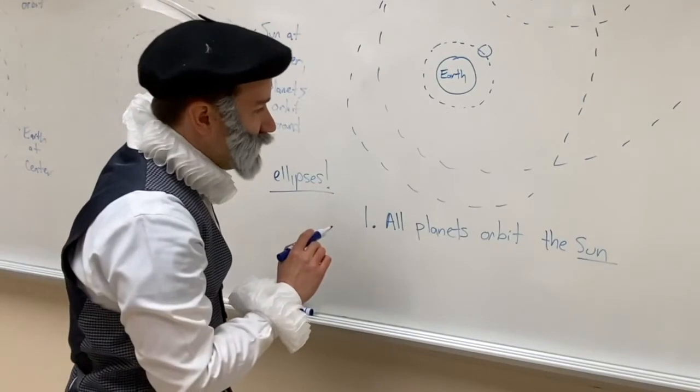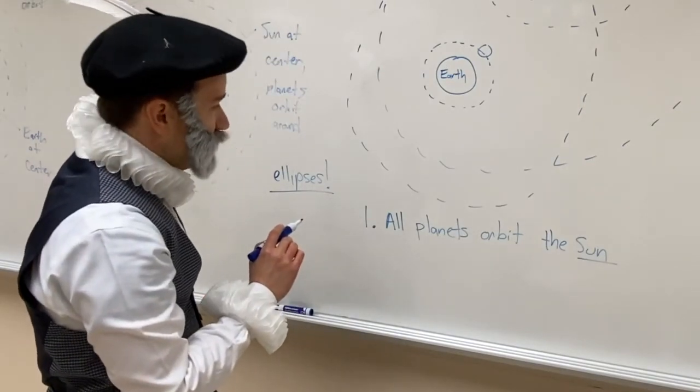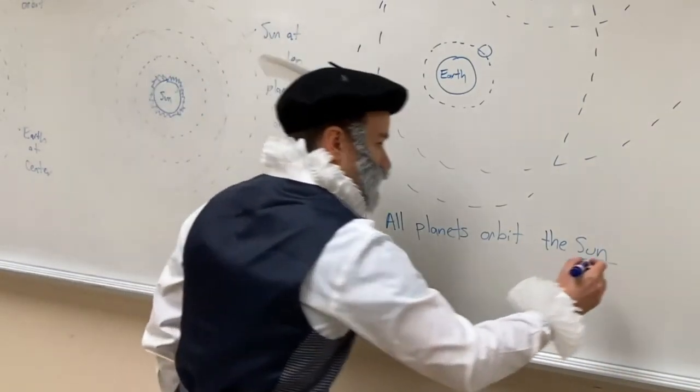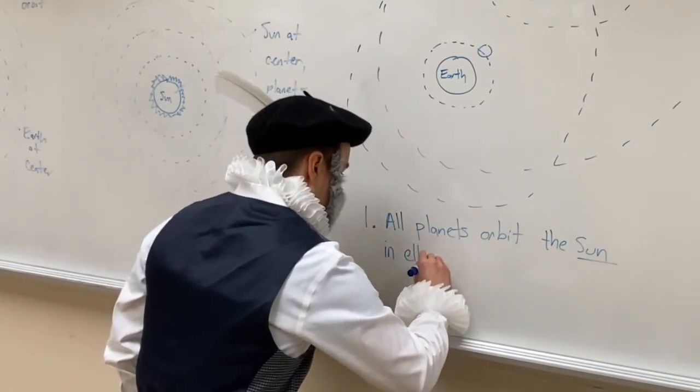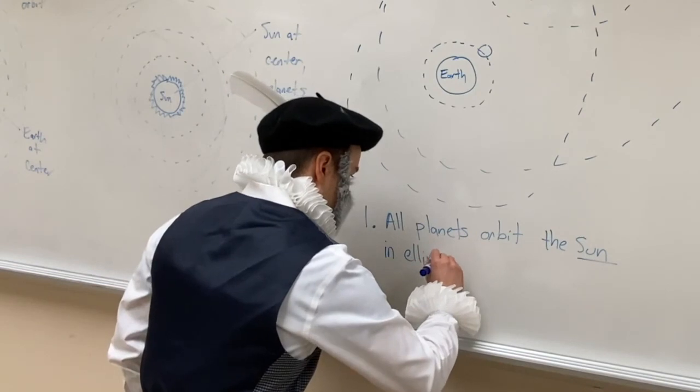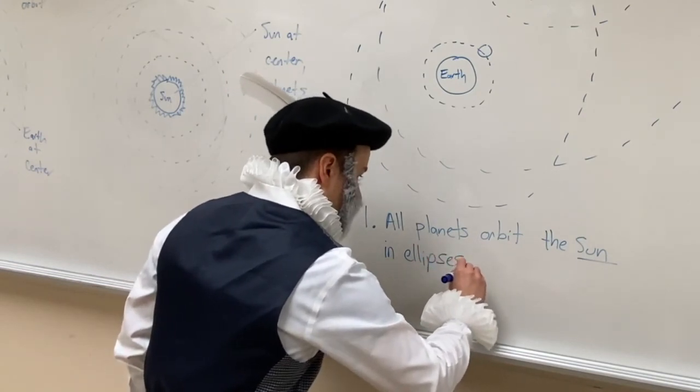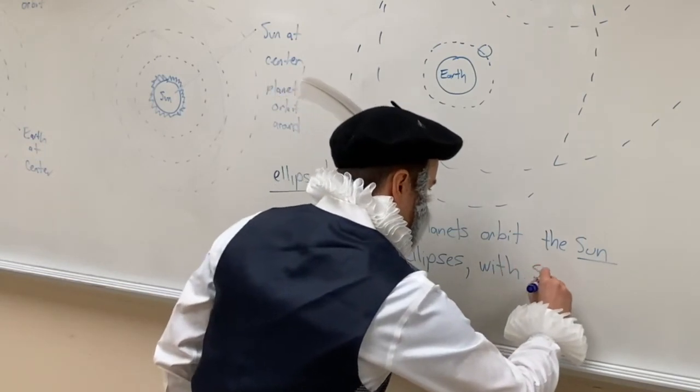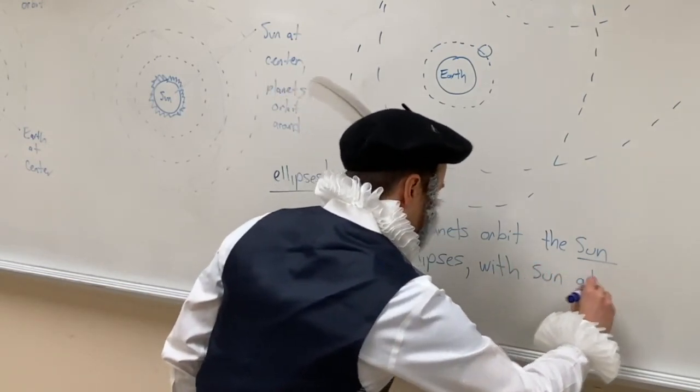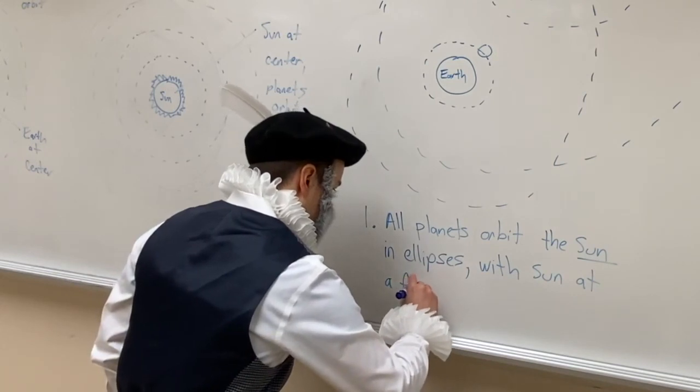I've shown you the one: all planets orbit the sun, as Copernicus had outlined, but in elliptical trajectories, ellipses, with the sun at a focus of the ellipse.